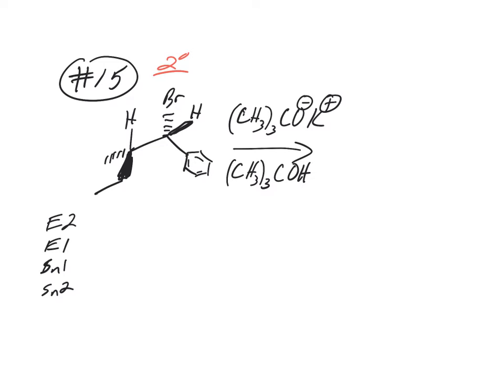So down to E2 and SN2. Then we look at the size of the nucleophile. Is this a big or small nucleophile? Big. Make sure you can recognize what this means as far as what the structure looks like. This is that tert-butyl group, a big bulky base. It's reactive, so we're probably thinking E2.